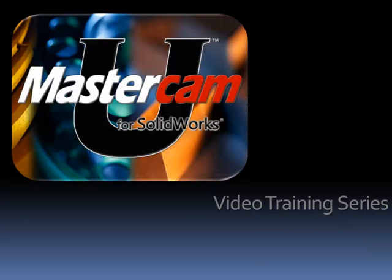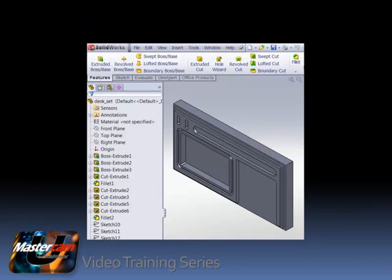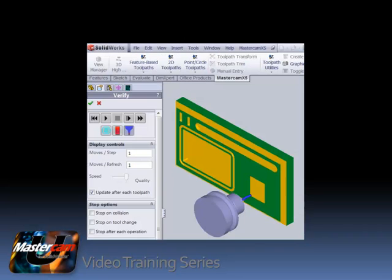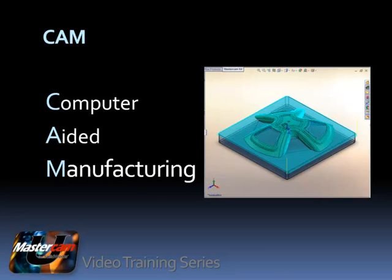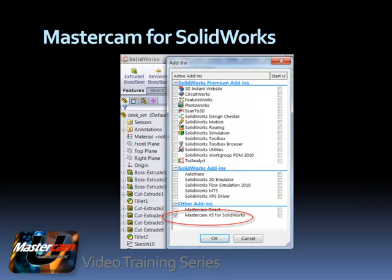In this course, I'll show you how to design mechanical components using SolidWorks, and then prepare them for manufacturing by applying tool paths in Mastercam. SolidWorks and Mastercam are standalone software products. SolidWorks is the leading CAD program, which stands for Computer Aided Design. Mastercam is the leading CAM program, which stands for Computer Aided Manufacturing. Mastercam for SolidWorks is a plug-in for SolidWorks that combines the two software products into one environment.